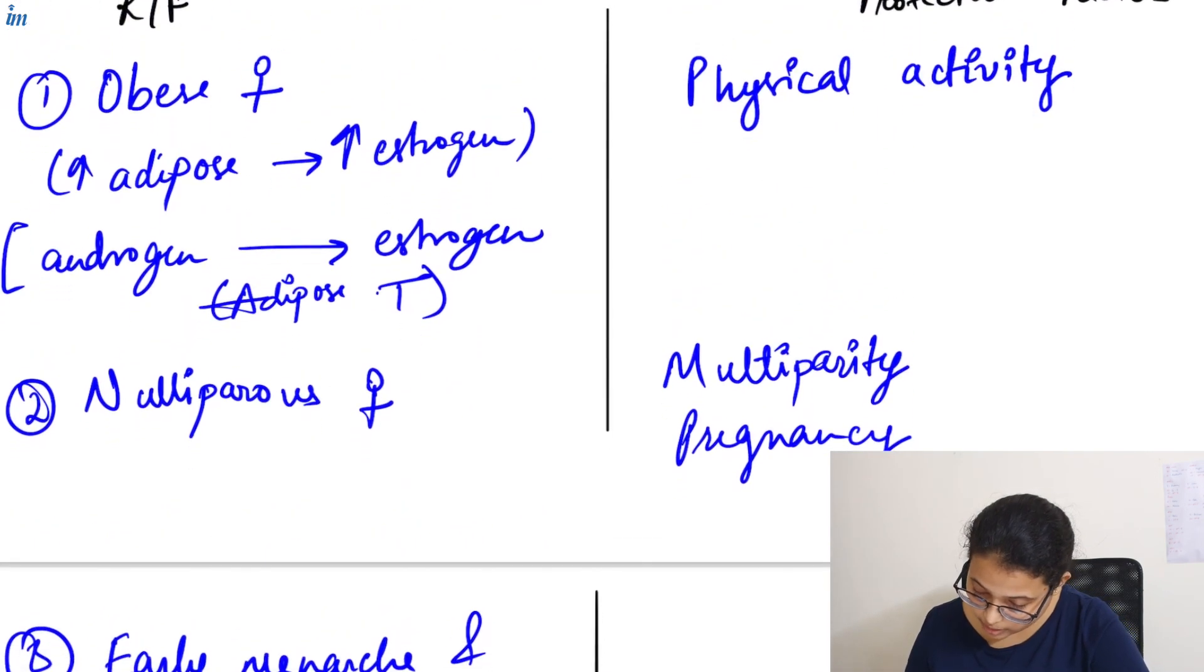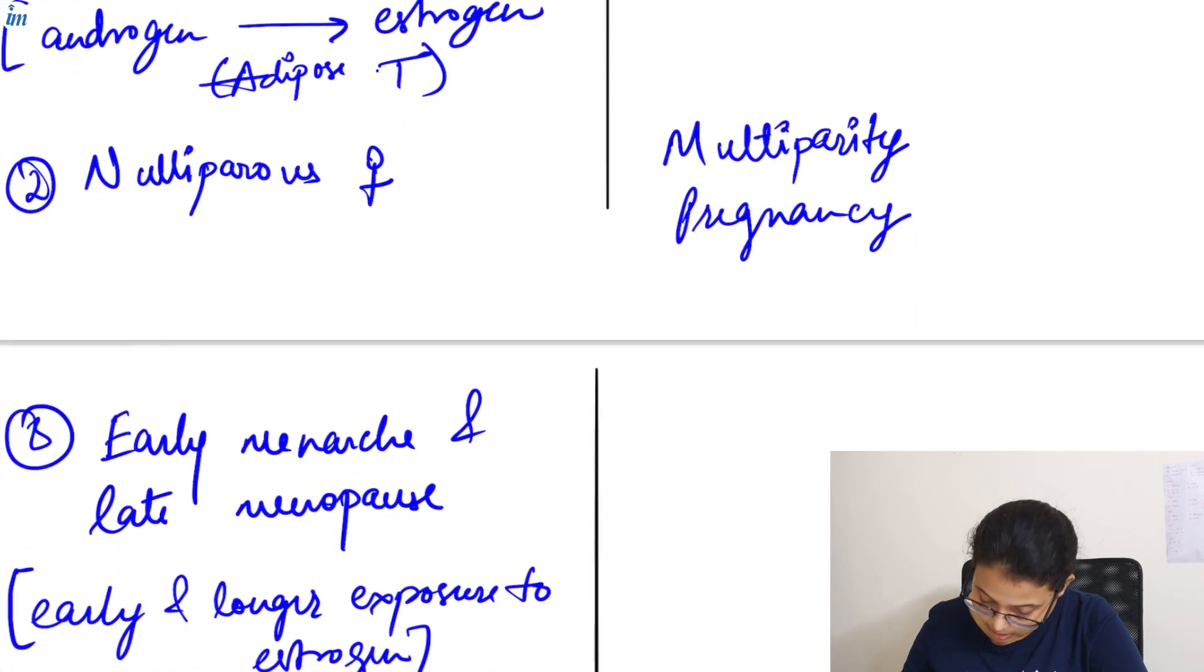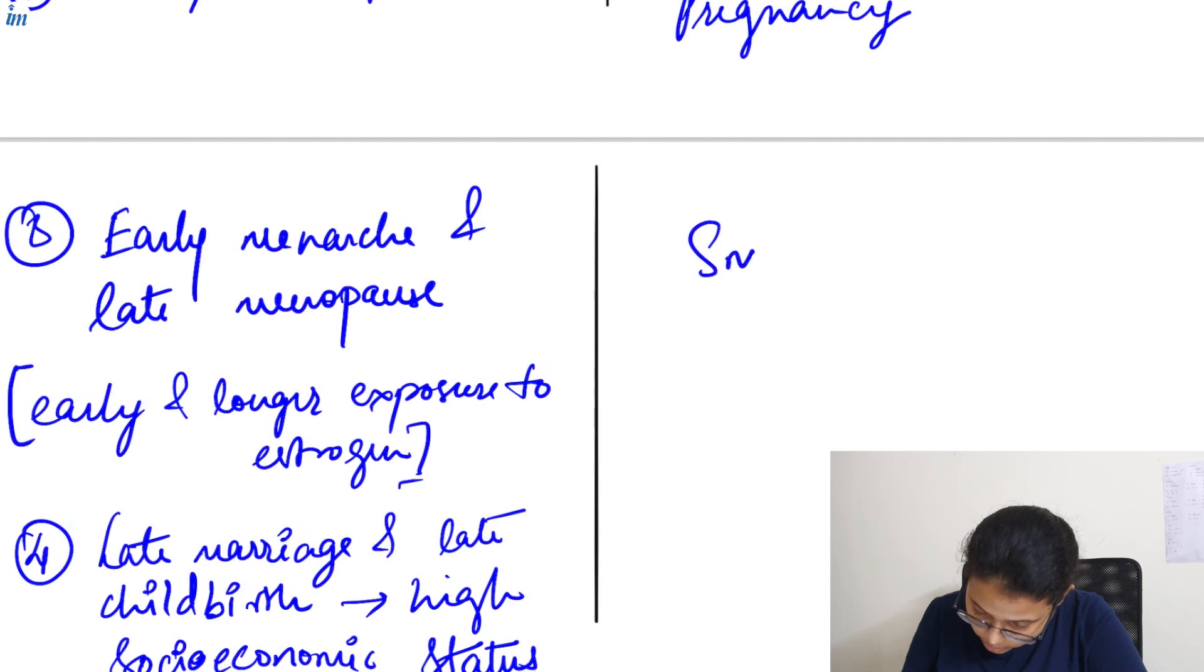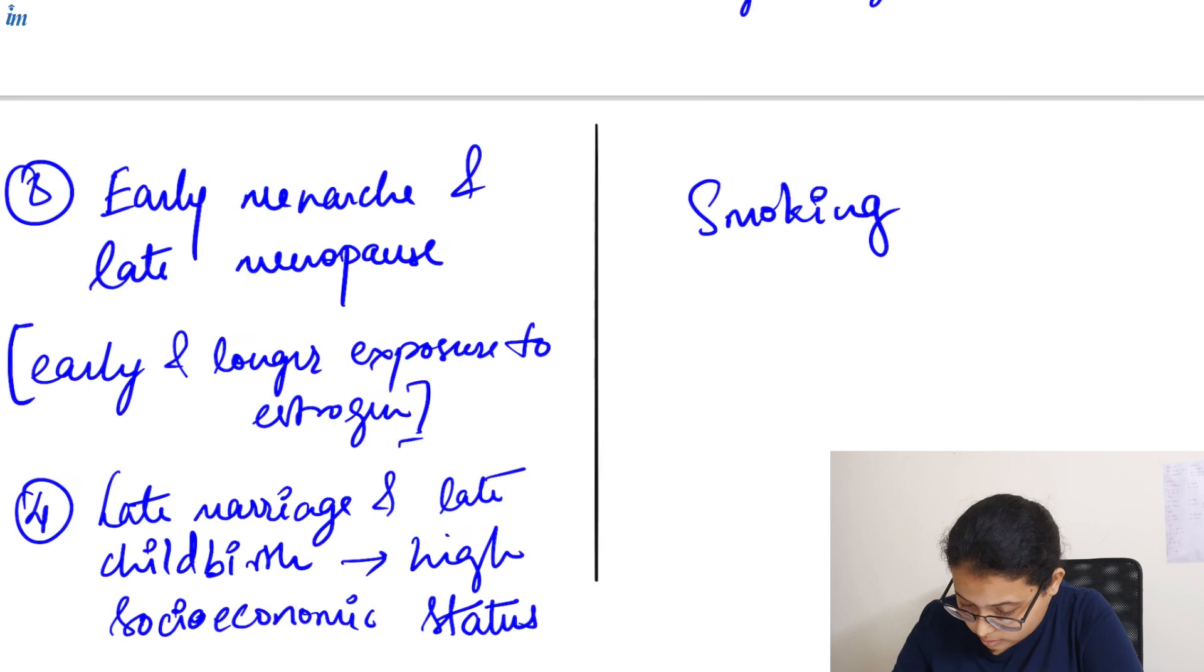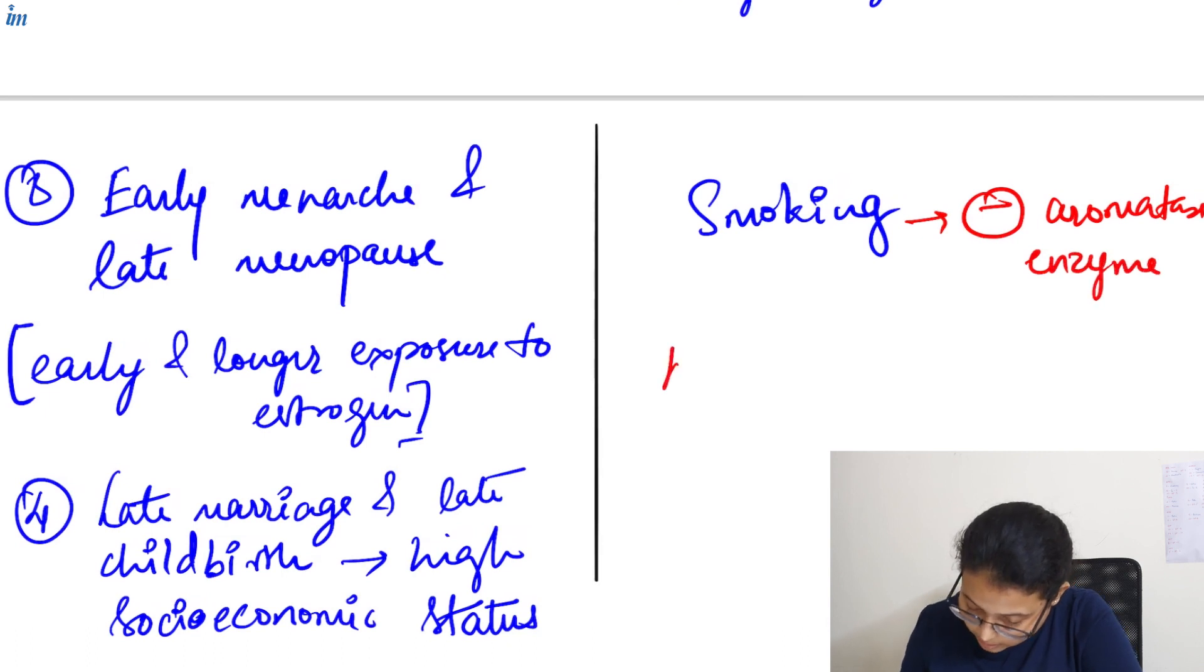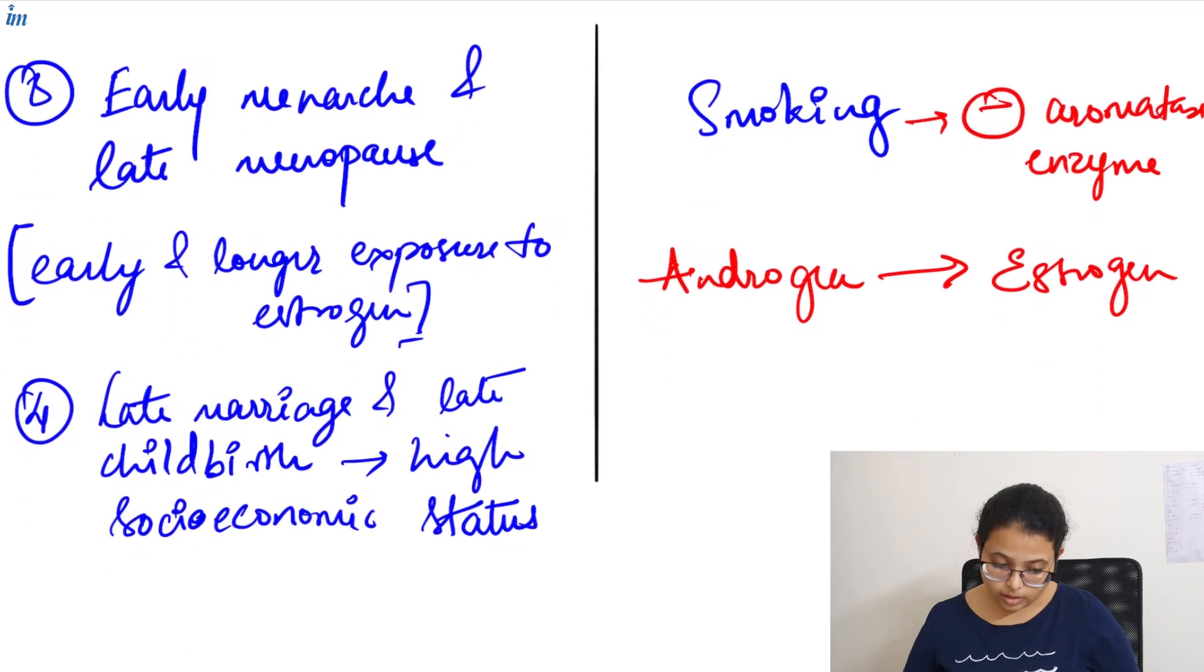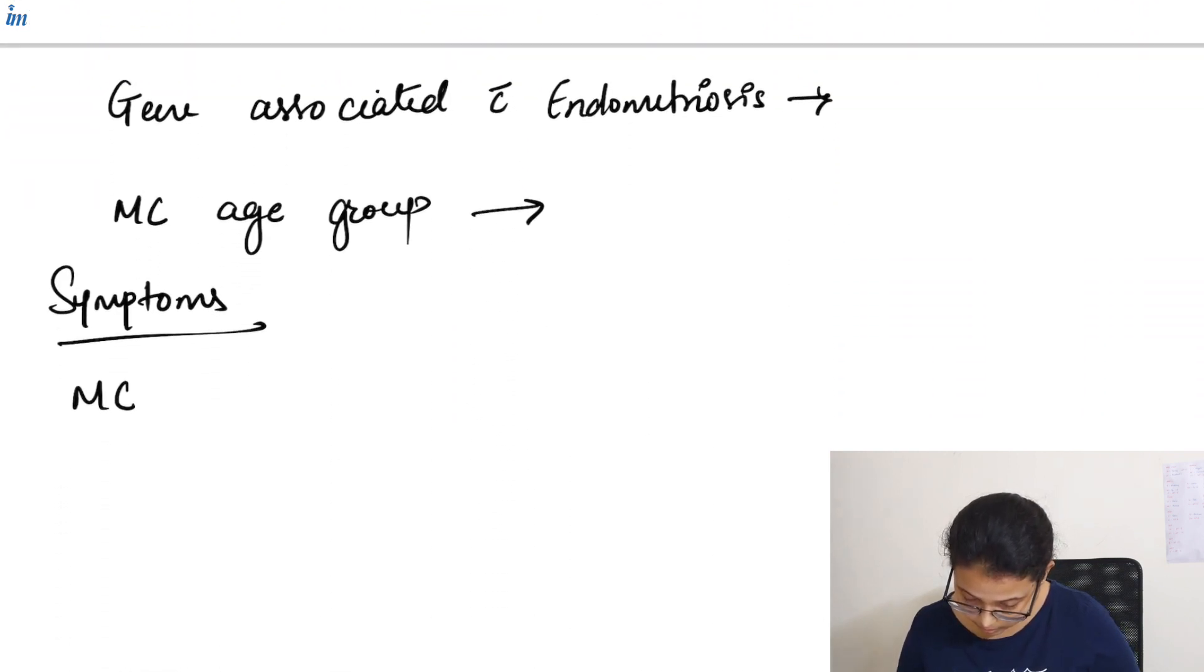In protective factor we have physical activity, multiparity, pregnancy and then we have one more thing here, smoking. Now smoking inhibits aromatase enzyme and we need aromatase for androgen to get converted to estrogen. Now let's see the gene associated with endometriosis.